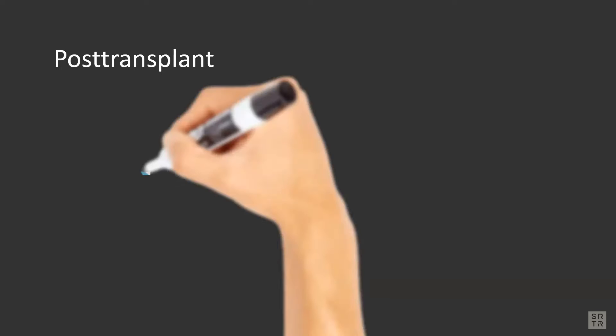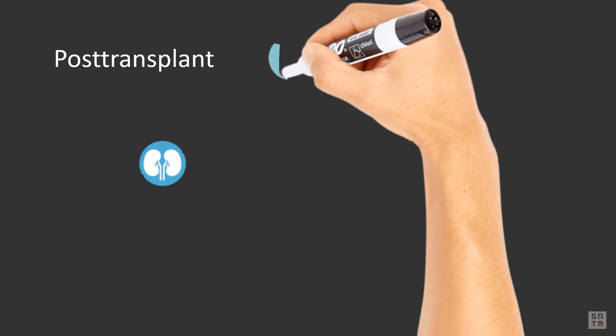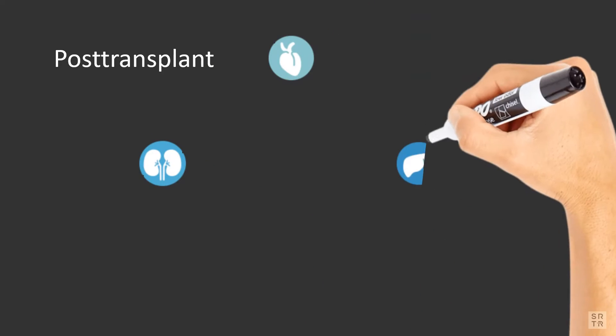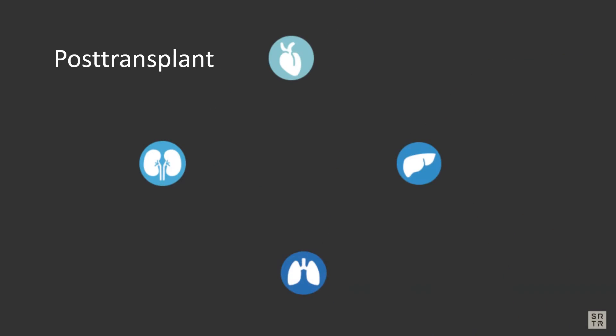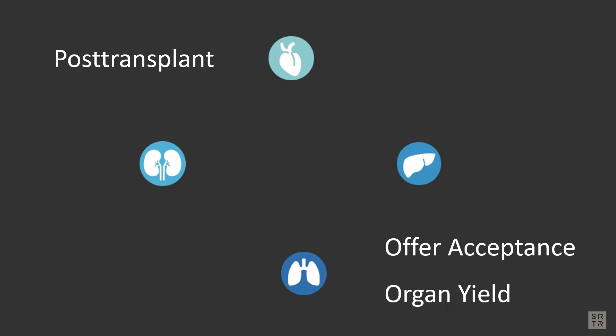SRTR began releasing post-transplant Q-sum charts to all liver, kidney, heart, and lung programs in July of 2013. Later, SRTR added Q-sums for offer acceptance for transplant programs and organ yield for OPOs.